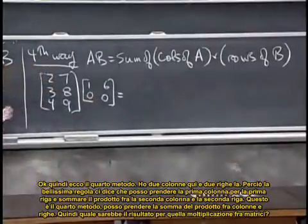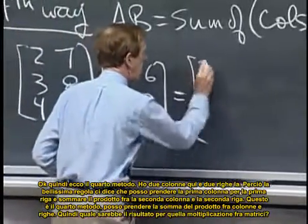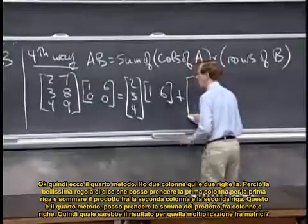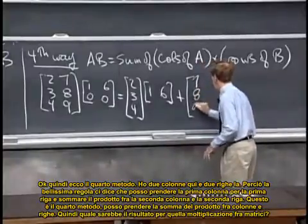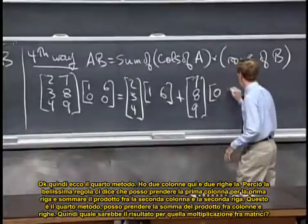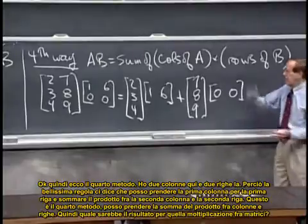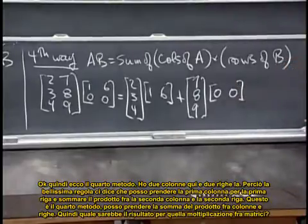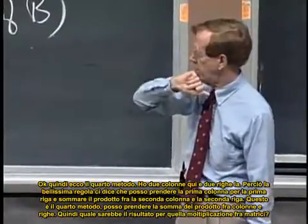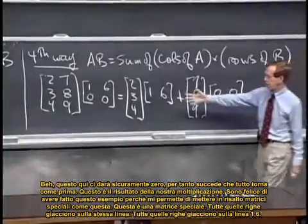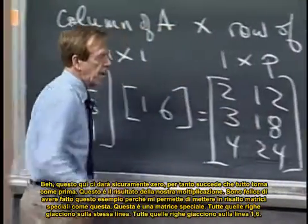So the beautiful rule is, seeing the whole thing by columns and rows, is that I can take the first column times the first row, and add the second column times the second row. So that's the fourth way, that I can take columns times rows, first column times first row, second column times second row, and add. Actually, what will I get? What will the answer be for that matrix multiplication? Well, this one is just going to give a zero, so in fact, I'm back to this, that's the answer for that matrix multiplication.